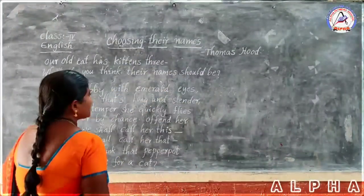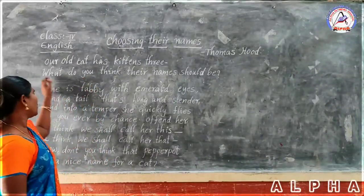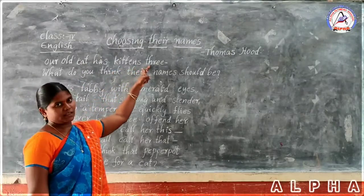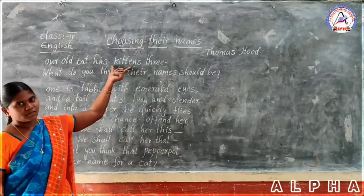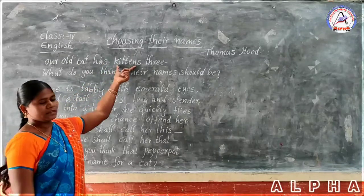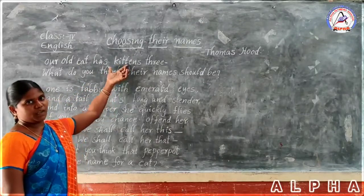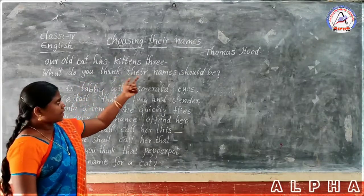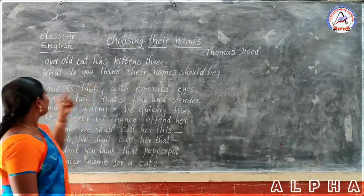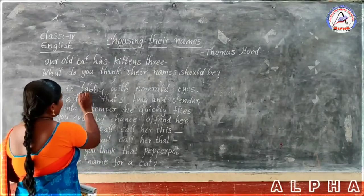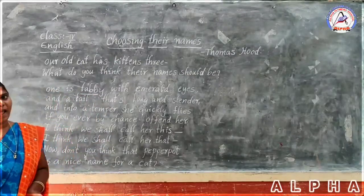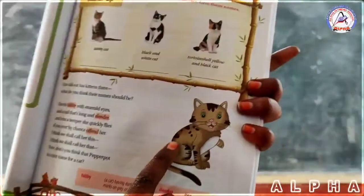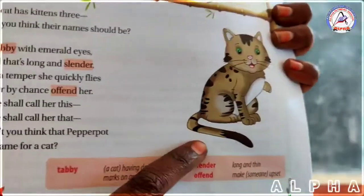This is the first stanza of this poem. 'Our old cat has kittens — three.' Do you know kittens? Baby cats. 'What do you think their names should be? One is tabby.' Tabby means a dark black colored cat with black color spots on her body. This is the tabby cat. Look at this picture.